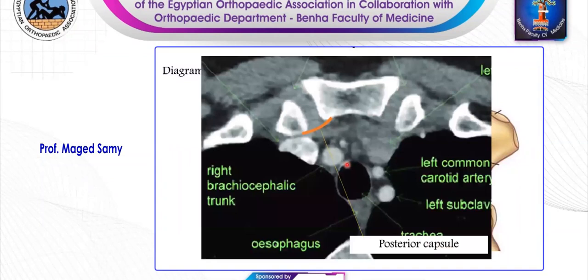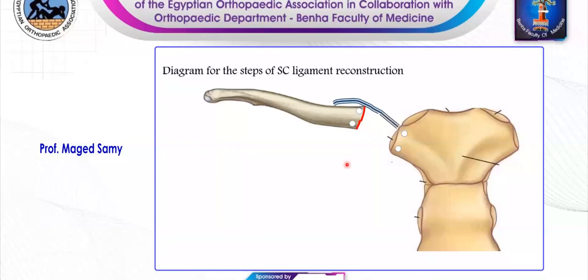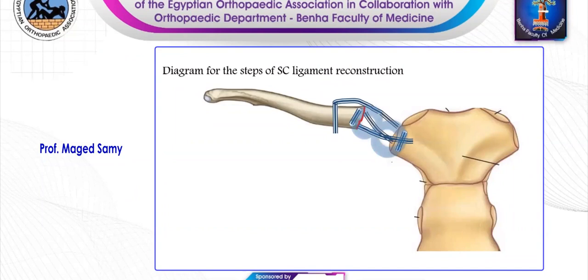Then we start passing our graft — always the tunnel should be anterior to the posterior capsule. This is a long graft, so we have enough length for additional fixation. We take it from posterior to anterior on the most proximal sternal tunnel, then anteriorly, then from the distal sternal tunnel anterior to posterior, then going to the proximal clavicular tunnel posterior to anterior, and then from posterior, creating a figure of eight. Then we have additional fixation with anterior support. For doing the tunnels on the clavicle, we support posteriorly with a Hohmann retractor to protect. For the sternum, we do the sternal tunnels making sure they go anterior to the posterior capsule.